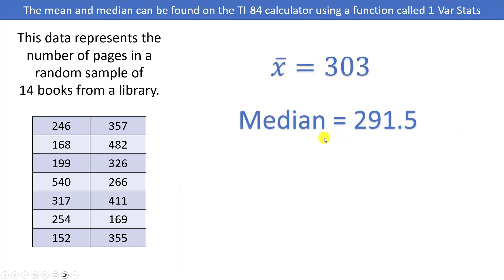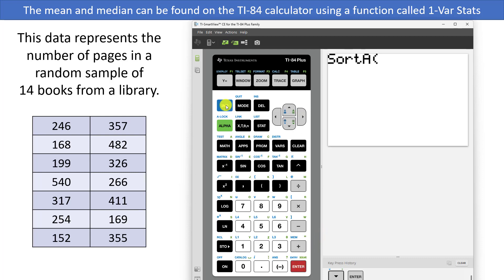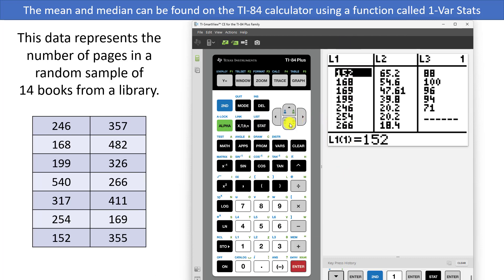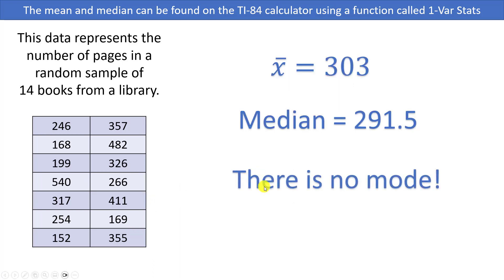So we had a mean of 303 and a median of 291.5. But what about the mode? The calculator doesn't give us the mode, so we can either look at our data to see if there are any repeats, or we can sort the data on our calculator to make it easier to identify repeats. To sort the data, go back to the stat menu, scroll down to the sort A option, press enter, then press second, number one, enter, and the calculator will say done. Going back into the stat list, the numbers are now sorted. In this case there are no repeats, so there is no mode.